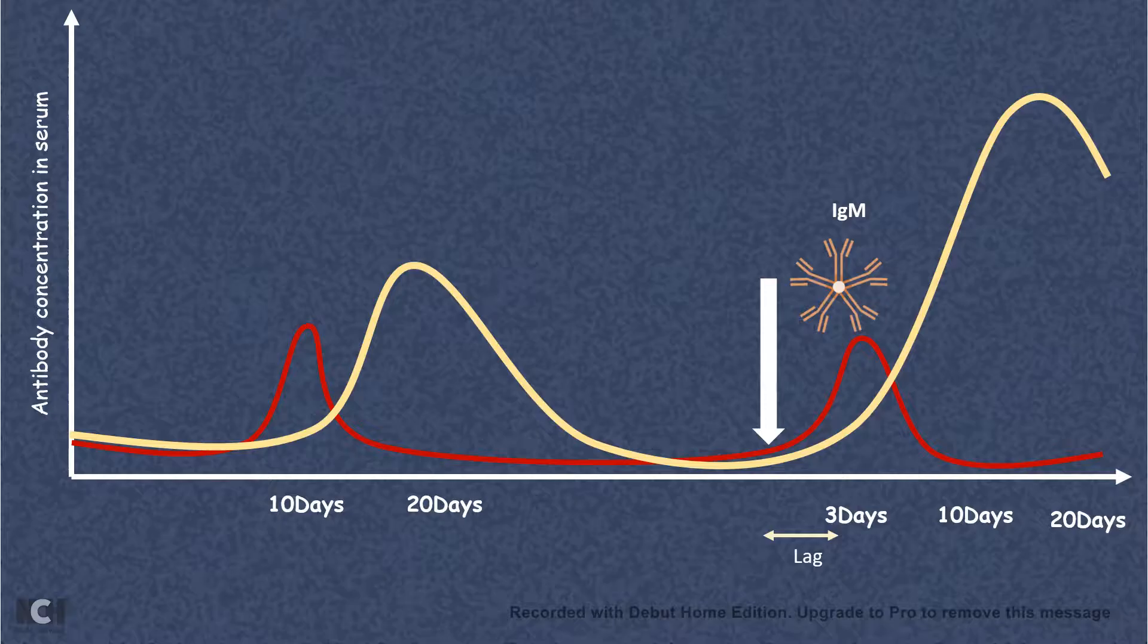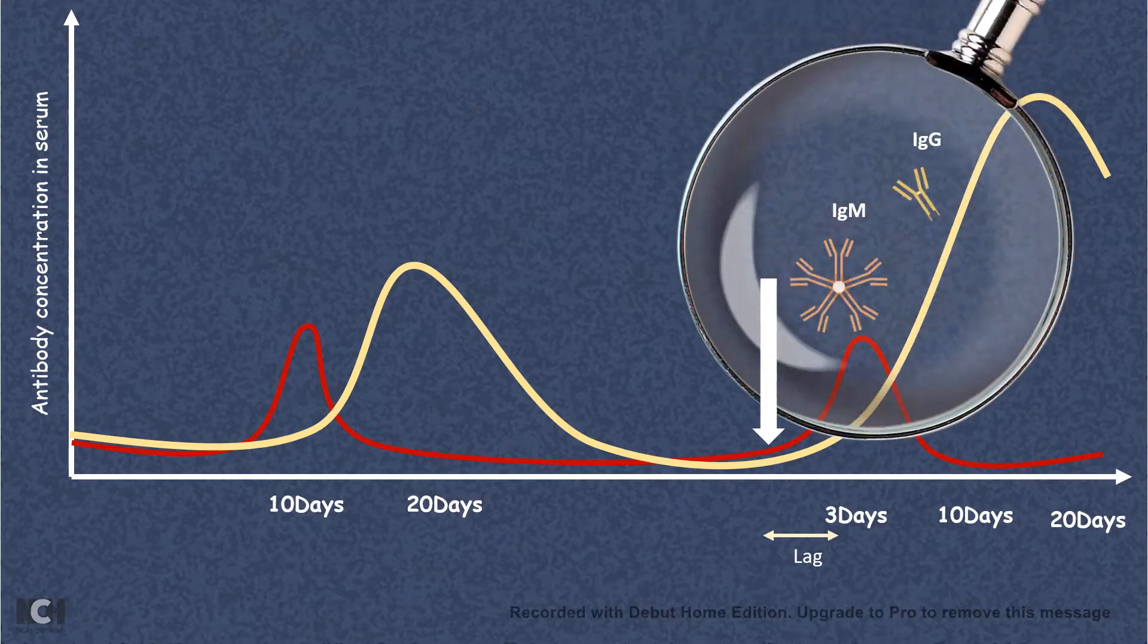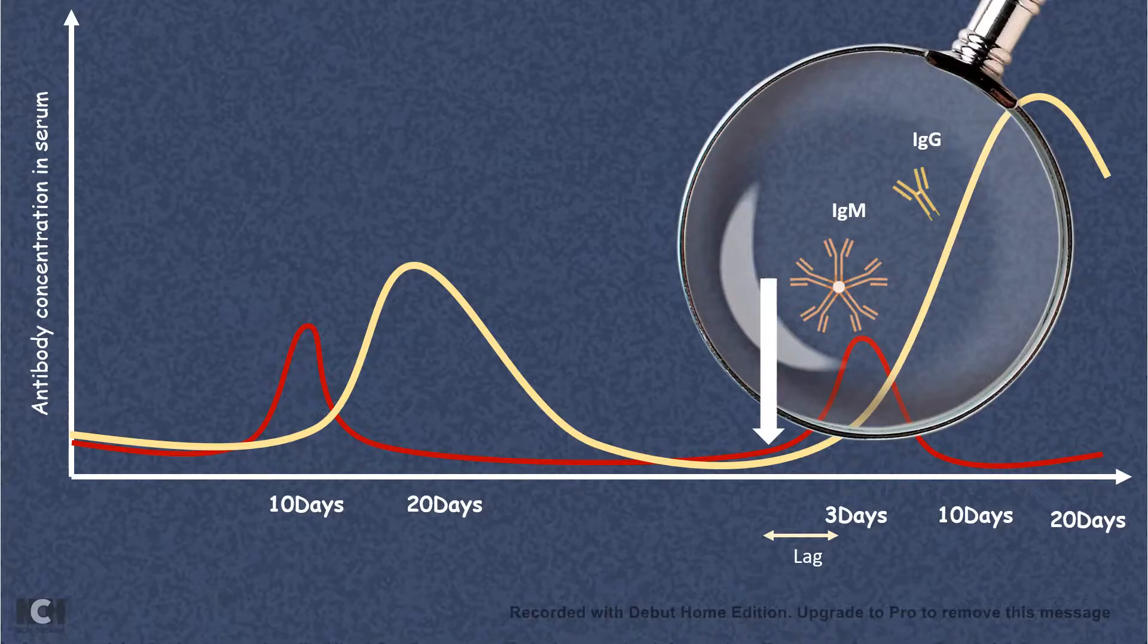Already the memory B cell had an idea that what pathogen has invaded the body, what type of antigen it produces, so it can quickly make the antibodies. First there is an IgM mediated response, but here the heightened response is actually triggered by IgG because isotype switching has happened in these cells.